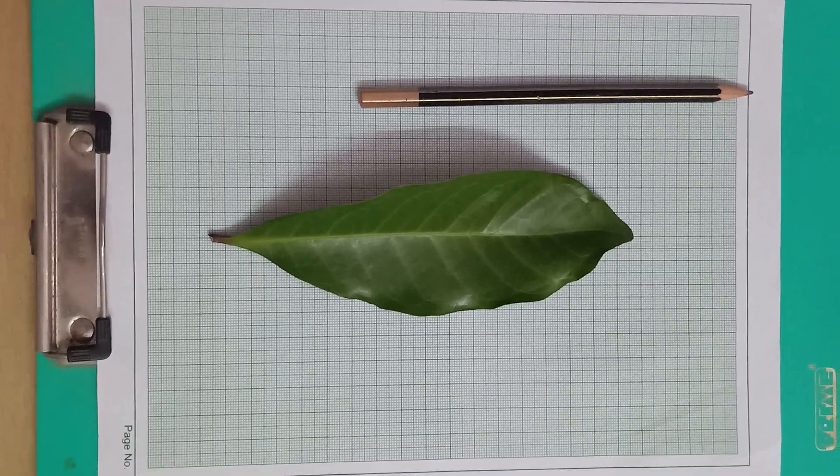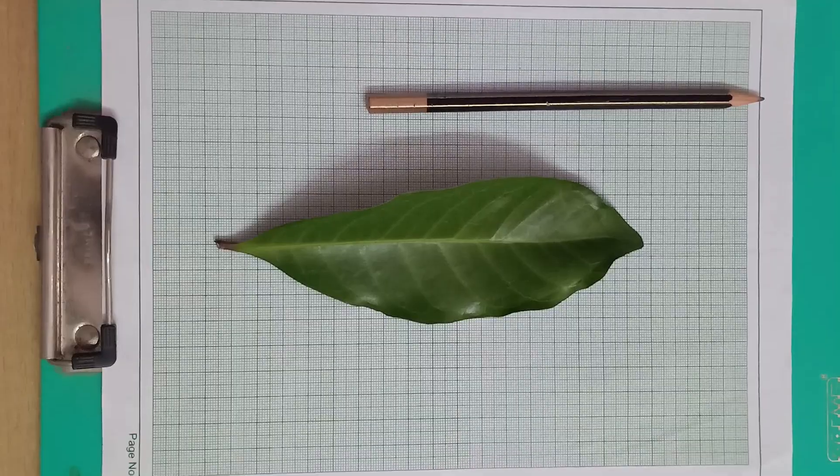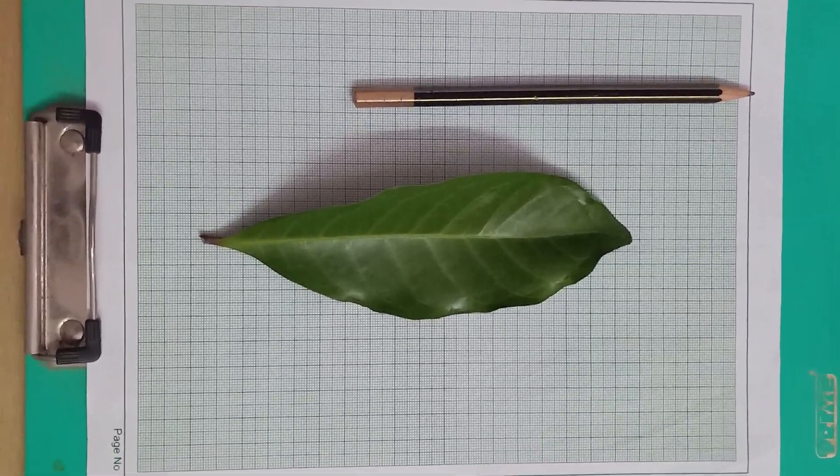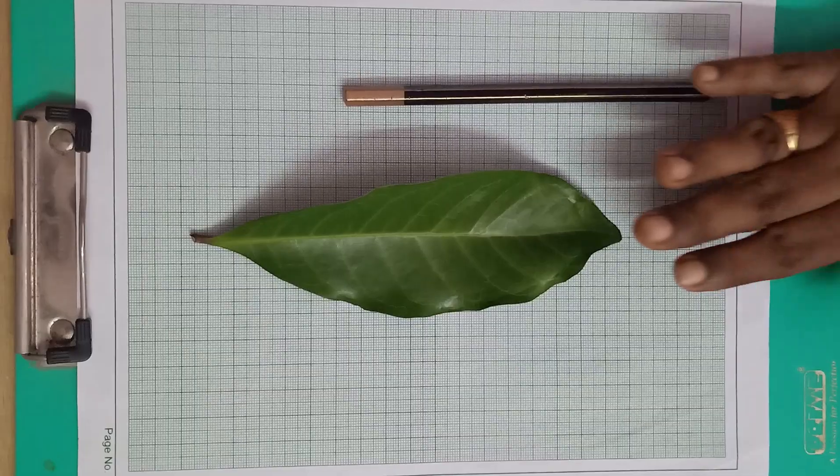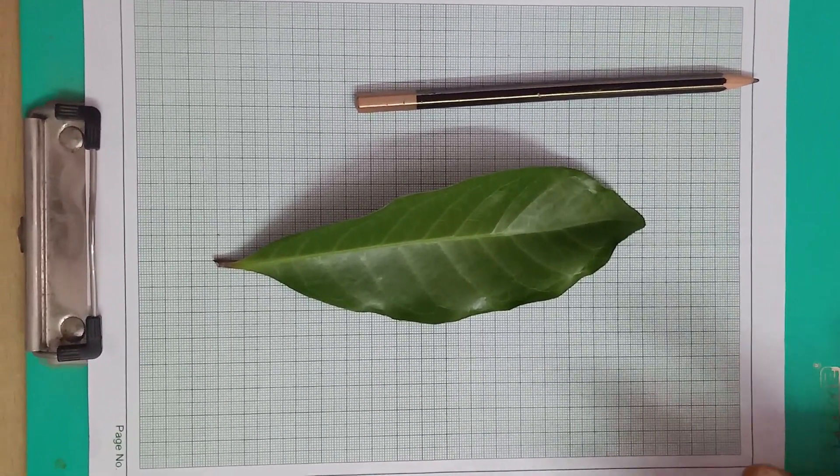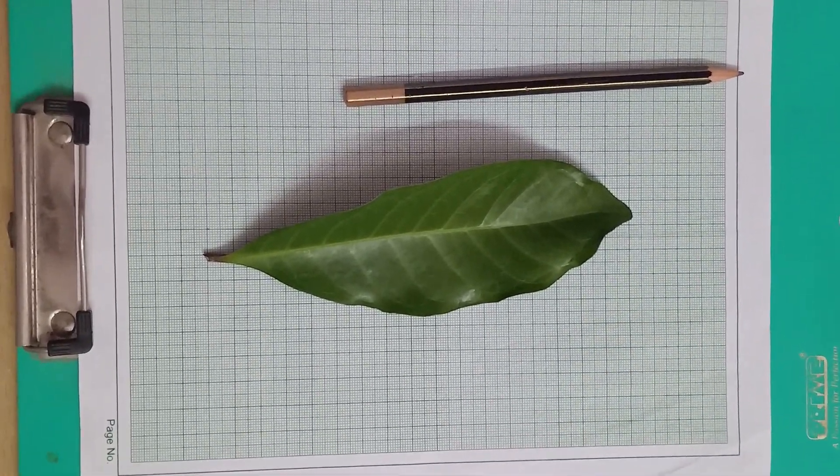Hi students, this is your science miss. In this session, we are going to do an activity aimed to find out the area of an irregular object. For an example, we are going to measure the area of a leaf. Required materials are a graph paper, a leaf, and a pencil. Shall we start the experiment?